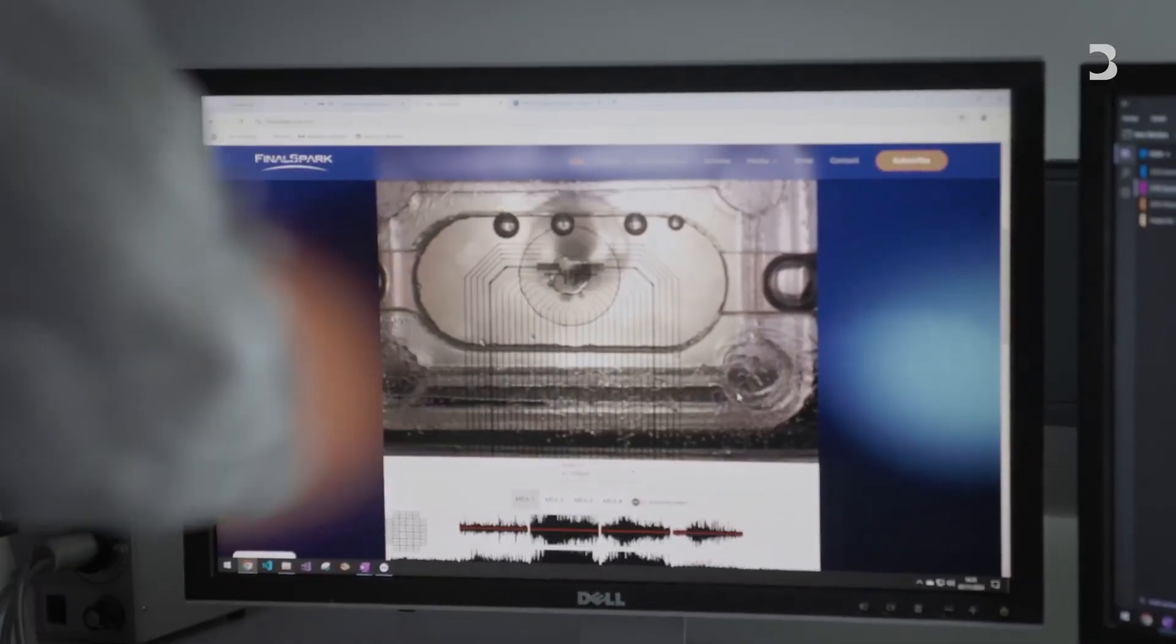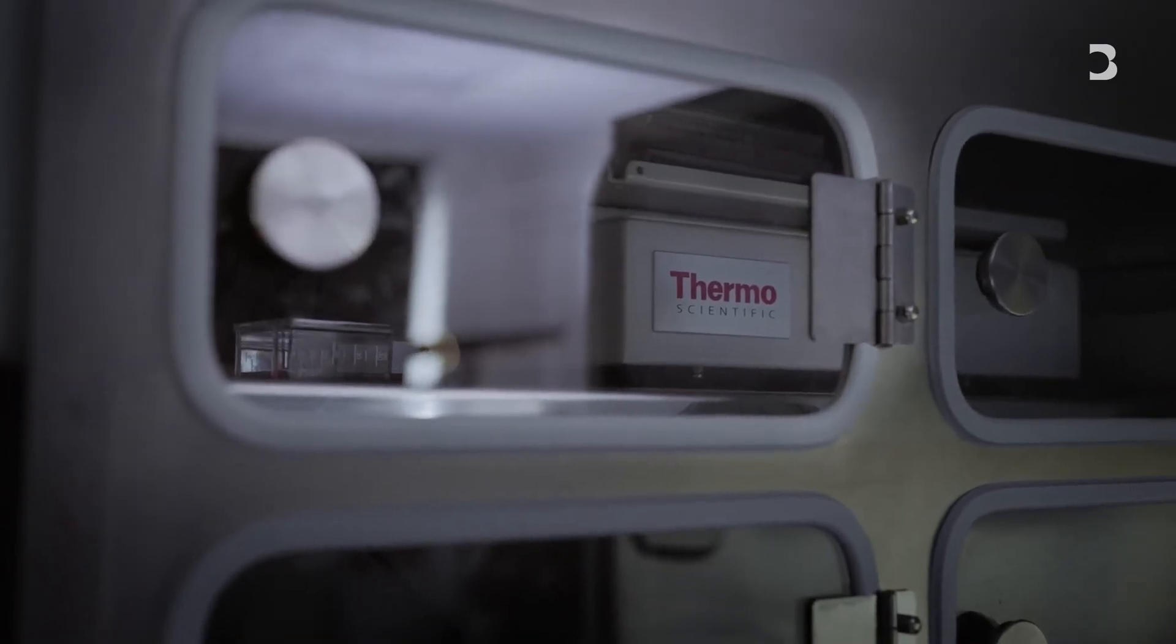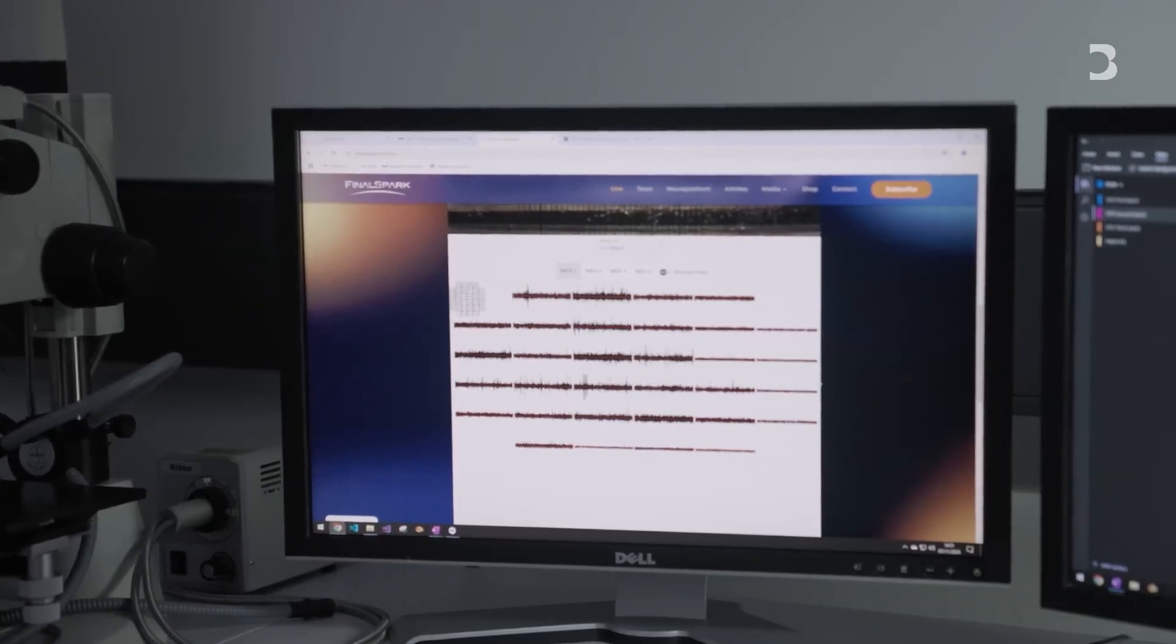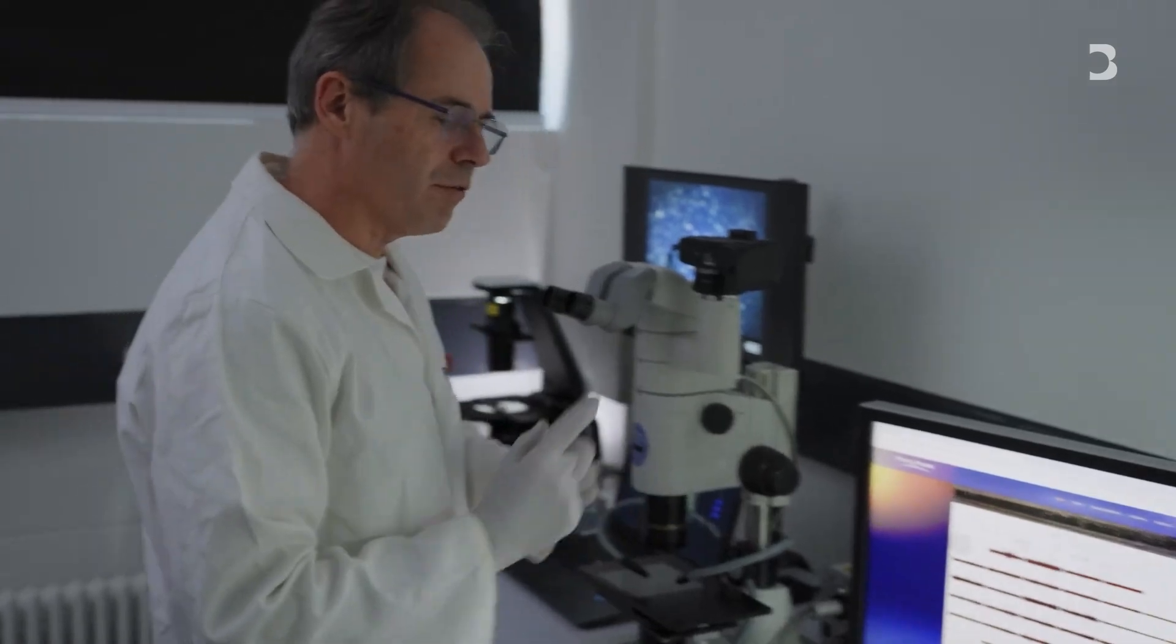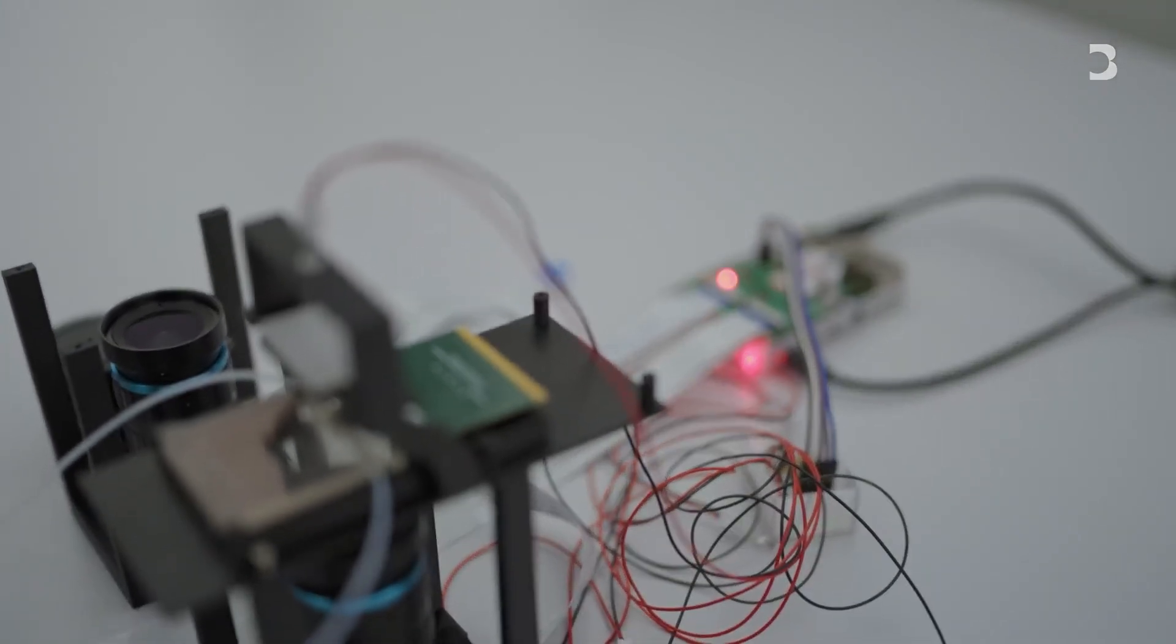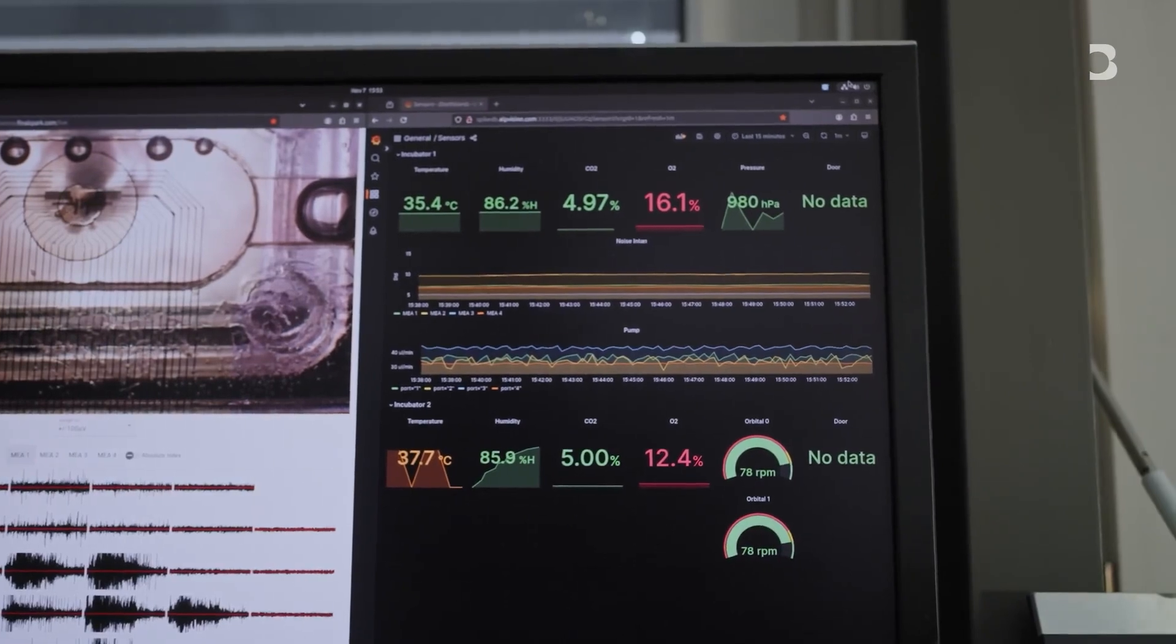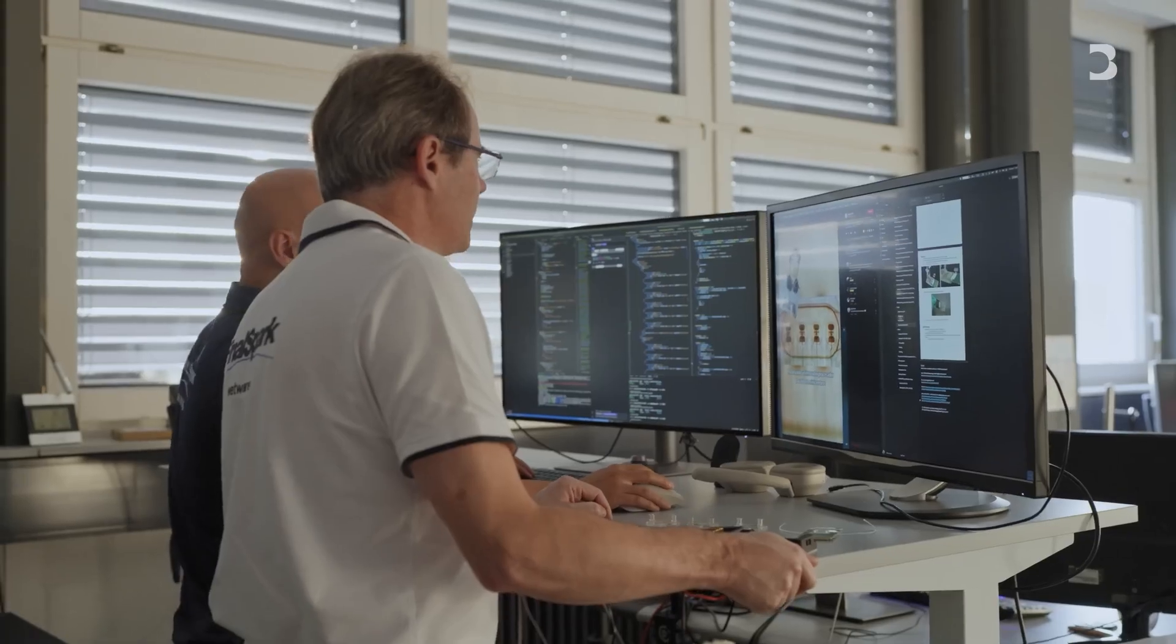One big problem still exists. Scalability. Current biocomputers only use a small number of artificial neurons. Scientists need to figure out if they can increase the complexity and amount of these biological parts to equal or even surpass regular computer systems. If they are successful, biocomputers could change AI in computing, creating machines that think more like human brains. But if scalability is a challenge, the technology might only be used for research purposes rather than in everyday use.